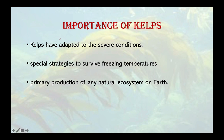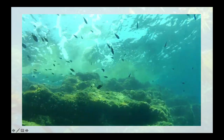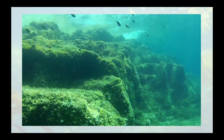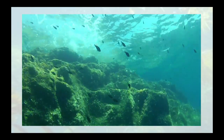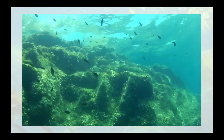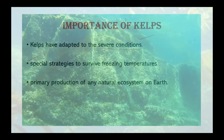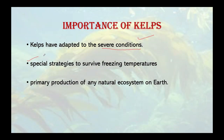Many find it surprising that marine plants can grow so well in harsh Arctic environments. Kelps have adapted to severe conditions that other land plants could not survive, such as freezing temperatures. These cool-water species have strategies to survive freezing temperatures and long periods of darkness, and can even grow under sea ice. In regions with cold, nutrient-rich water, they can attain some of the highest rates of primary production of any natural ecosystem on Earth.